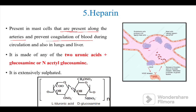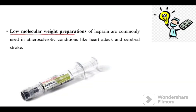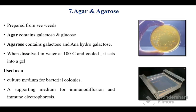Heparin is present in mast cells found along the arteries, and it prevents coagulation of blood during circulation. It is also present in lungs and liver. Heparin is made of two uronic acids plus glucosamine or N-acetylglucosamine and is extensively sulfated. Low molecular weight heparin preparations are commonly used in atherosclerotic conditions like heart attack and cerebral stroke because it is an anticoagulant. Heparin sulfate is extracellular, found in basement membranes and on cell surfaces; it is similar to heparin but less sulfated and consists of glucosamine and glucuronic acid.